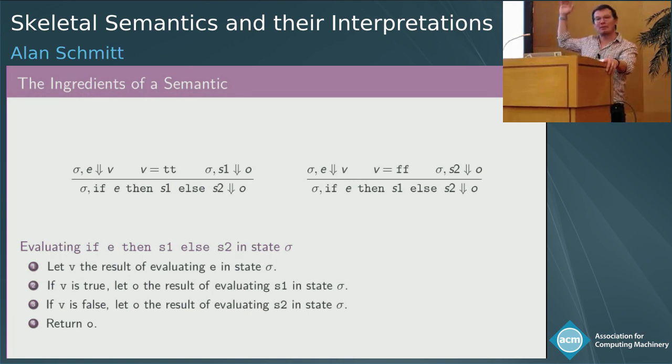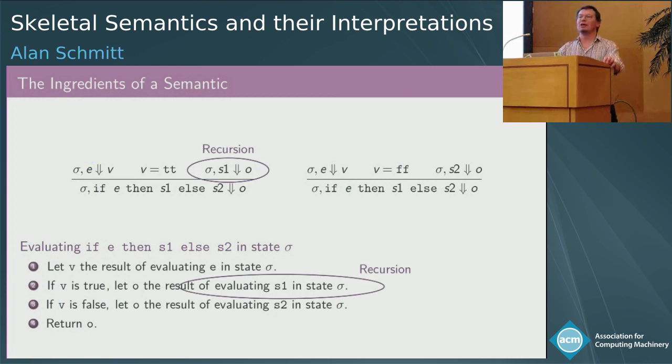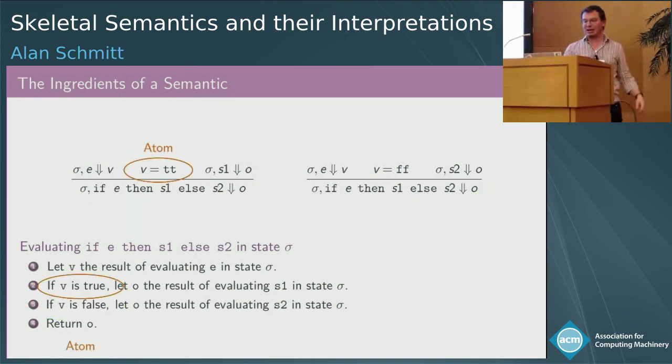Here at the top you have the if rule expressed in a big step semantic and at the bottom expressed as some kind of algorithm. They all share the same thing: there's a notion of sequence, then do something else, a notion of recursion to evaluate a subterm, and a notion of choice. For instance, in big step you have two rules that may apply for the conditional. And there's a notion of atom, black boxes, things that are not further detailed, like comparing something to true or adding two integers.